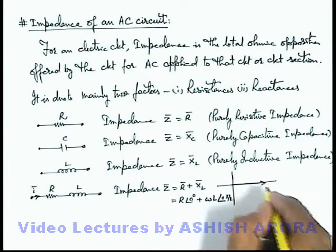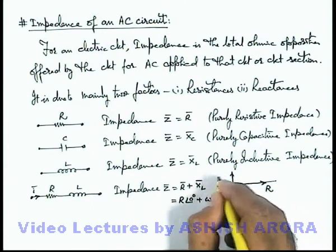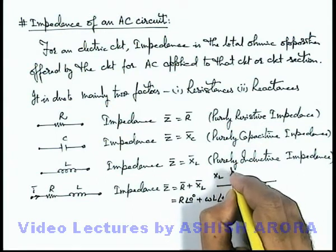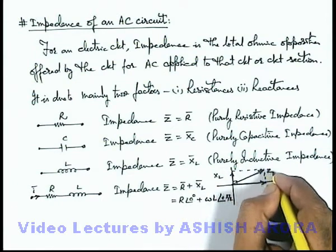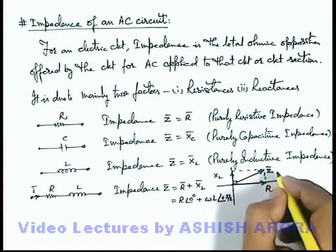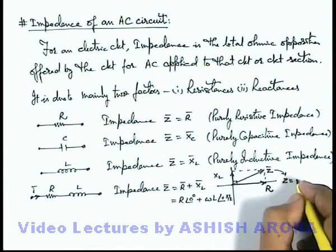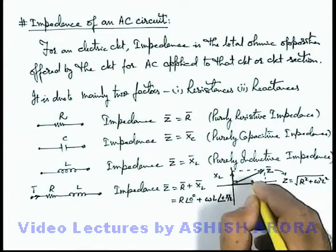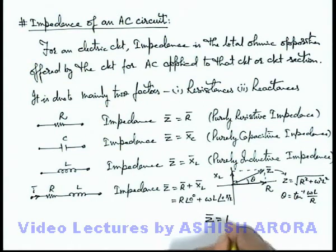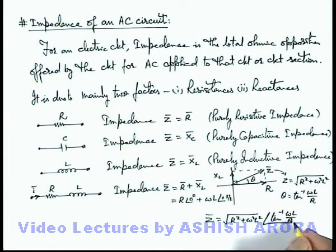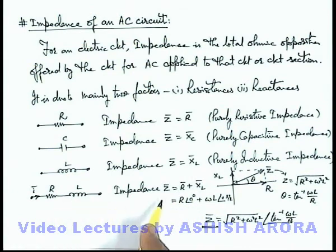On the phasor diagram, we draw resistance at zero degrees and XL phasor (omega L) at plus pi by 2. By the parallelogram law of vector addition, the resultant phasor gives us the value of Z phasor. The magnitude of Z is simply root of R squared plus omega squared L squared, and the angle theta is tan inverse of omega L by R. So Z phasor equals root of (R² + ω²L²) at angle tan⁻¹(ωL/R). This is how the impedance phasor is calculated using resistance and reactance phasors for various kinds of circuits.